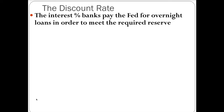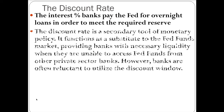Our next tool of monetary policy is the discount rate. This is the interest rate that banks pay the Federal Reserve for overnight loans in order to meet the required reserve. If banks need emergency cash, they can go to the Federal Reserve discount window and borrow money. The rate at which they borrow that money is called the discount rate — because these banks are borrowing from the Federal Reserve discount window.